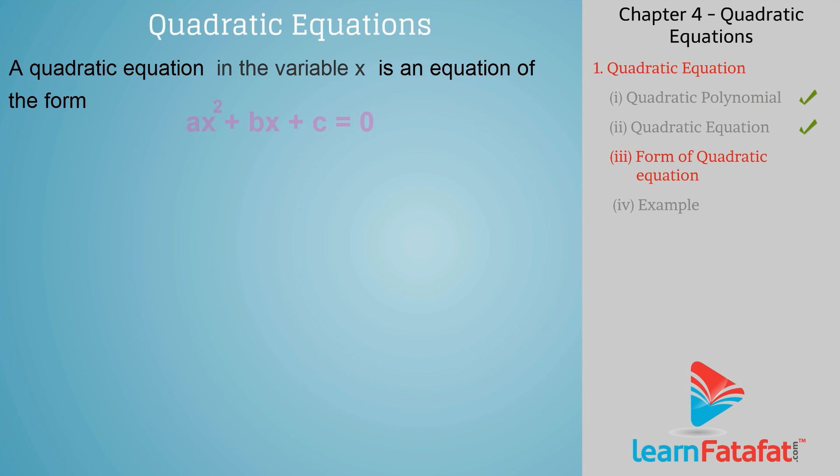ax² + bx + c = 0, where a, b, and c are real numbers, and a is not equal to zero.